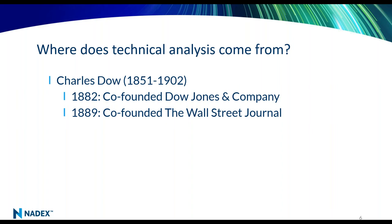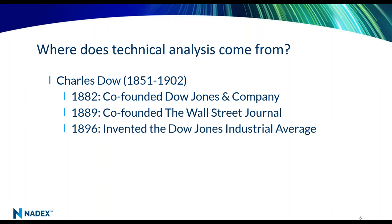Back then, a lot of the news and analysis that people got on the markets was actually marketing material being sponsored by specific people with a specific agenda. Mr. Dow wanted an independent source. That little newsletter that Dow Jones and Company created seven years later eventually morphed into what is the Wall Street Journal, which still survives to this day as a pillar of truly independent news and analysis for the financial markets.